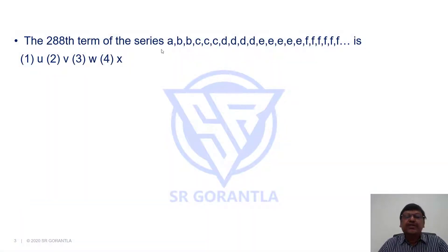The 288th term of the series A, B, B, then C comes 3 times, D 4 times, E 5 times and so on is.